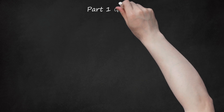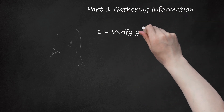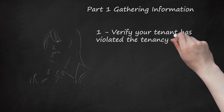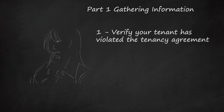Part 1: Gathering Information. Verify your tenant has violated the tenancy agreement. A Section 8 notice can be used to evict a tenant at any time an occupancy agreement is in effect, but you must be able to prove to the court how the agreement has been violated.